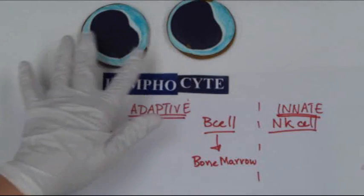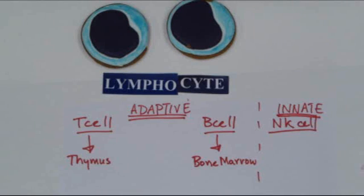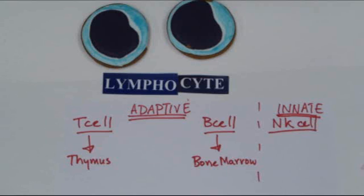We can find lymphocytes not only in the bloodstream, in transit from the bone marrow or the thymus, but we can also find them in the spleen, lymph nodes, and the appendix.